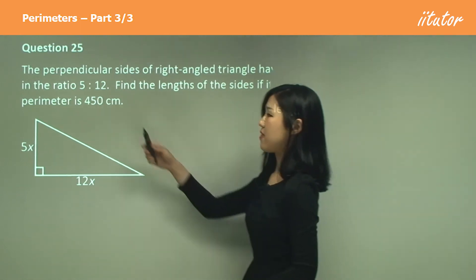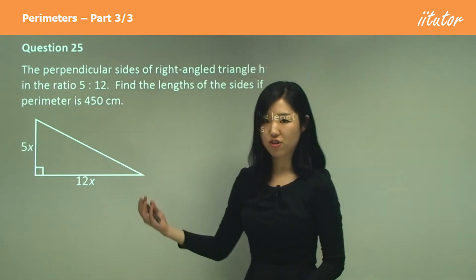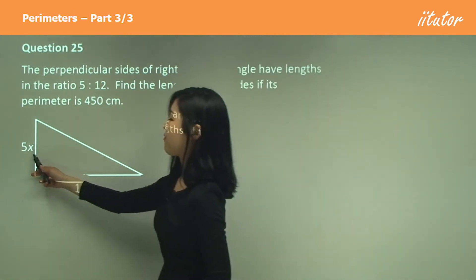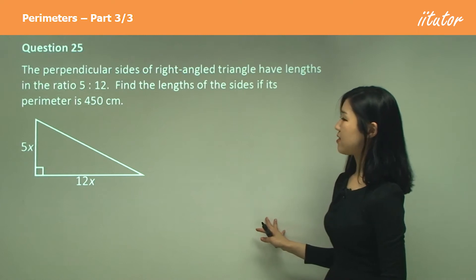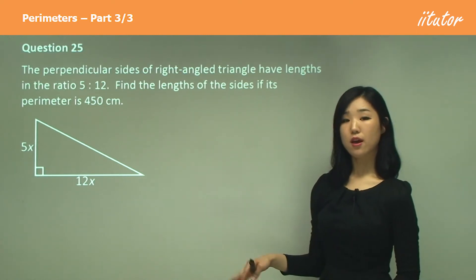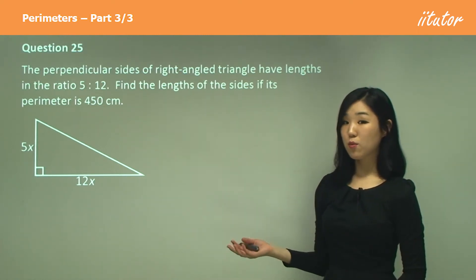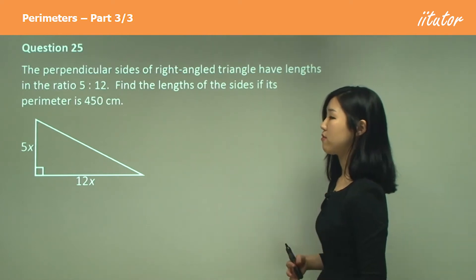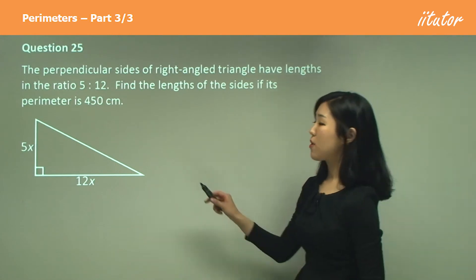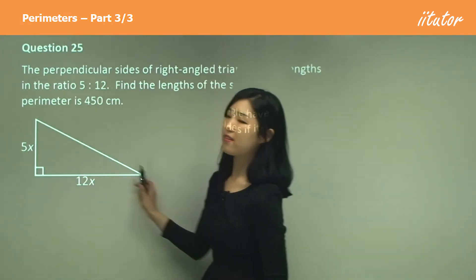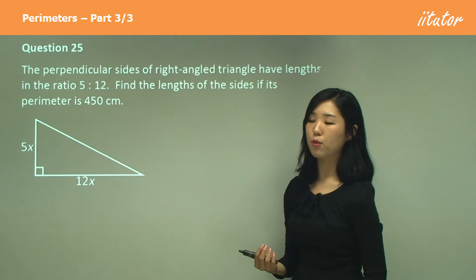Make sure you don't think that these are the sides—those are the ratios. That's why I'm saying it's 5x and 12x. It's asking us to find the length of the sides if the perimeter is 450. Like the previous question, they give us the perimeter, which is 450. We have to find what each length is without any pronumerals.